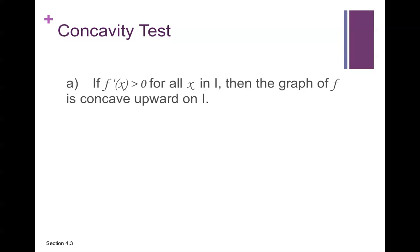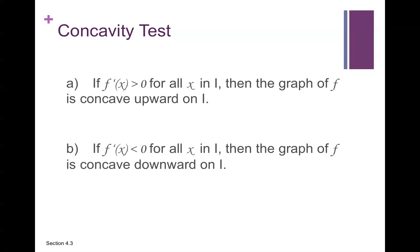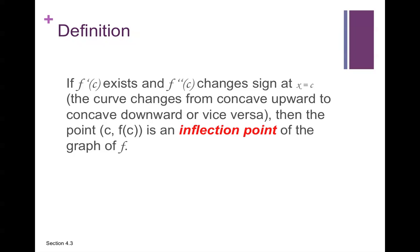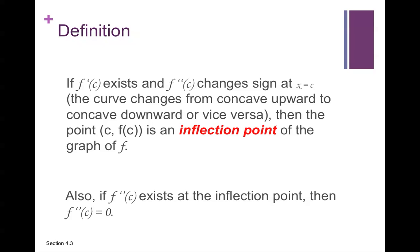Concavity test: if f double prime of x is greater than 0 for all x in I, then the graph of f is concave upward on I. If f double prime of x is less than 0 for all x in I, then the graph of f is concave downward on I. By definition, if f prime of c exists and f double prime changes sign at x equals c — so the curve changes from concave upward to concave downward or vice versa — then the point (c, f of c) is an inflection point. Also, if f double prime of c exists at the inflection point, then f double prime of c equals 0.